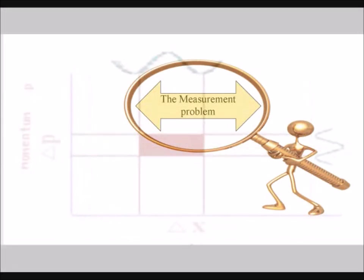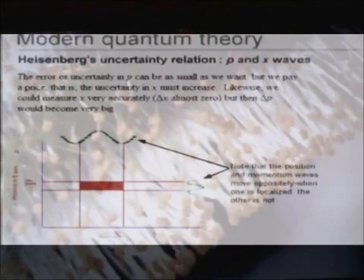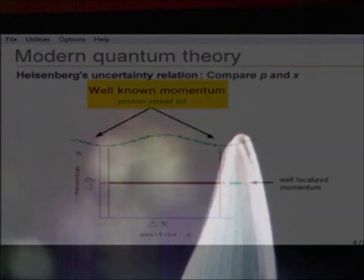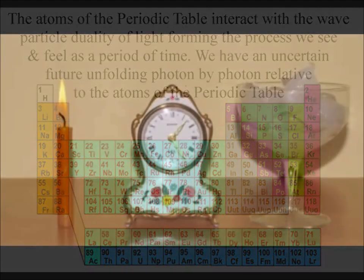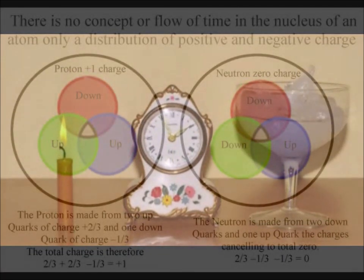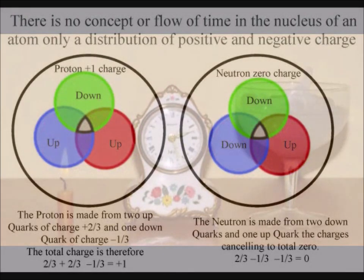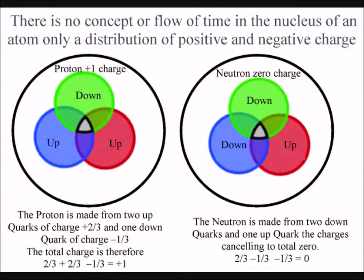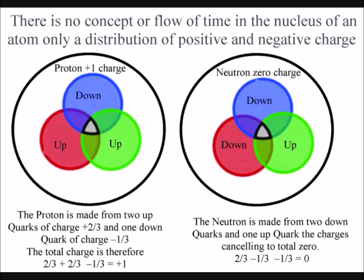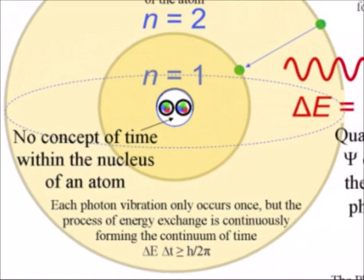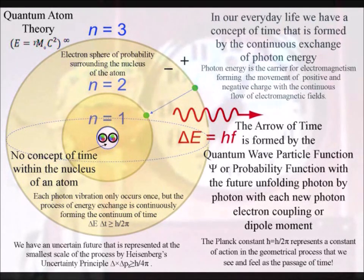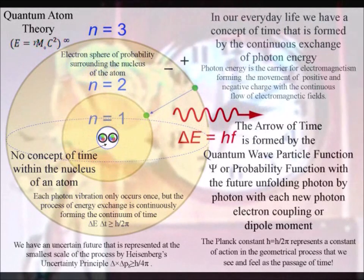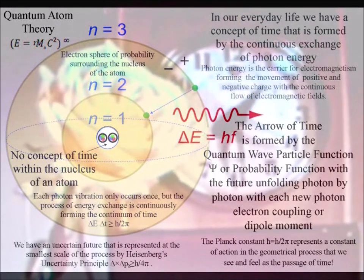There is a logical explanation of the measurement problem if the universe is explained as a continuum, with an emergent future unfolding relative to the atoms of the periodic table. When we look down into the atoms, we find there is no concept or flow of time in the subatomic world within the atoms — all we have is part charge, or fractions of charge. This is logical if what we see and feel as the passage of time is formed by a process of energy exchange relative to the electron probability cloud surrounding the nucleus of the atom, with the spontaneous absorption and emission of light in the form of photon energy, forming the ever-changing world of our everyday life with the movement of positive and negative charge and the flow of electromagnetic fields.